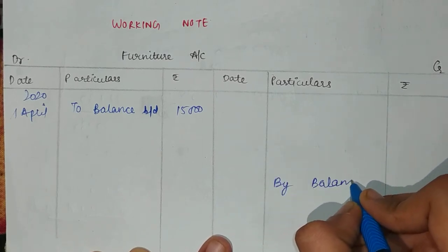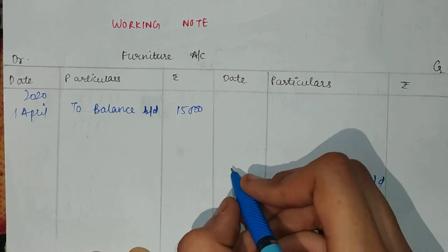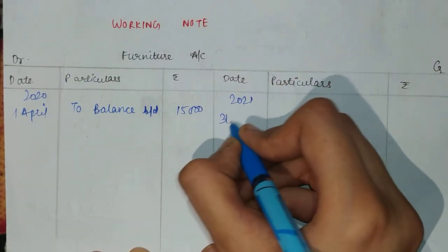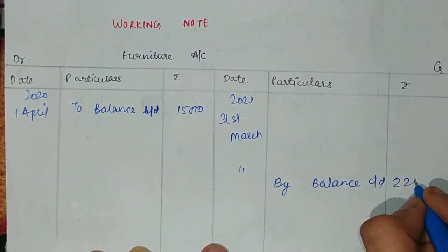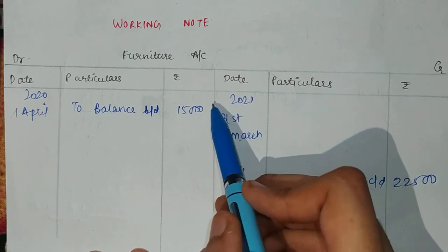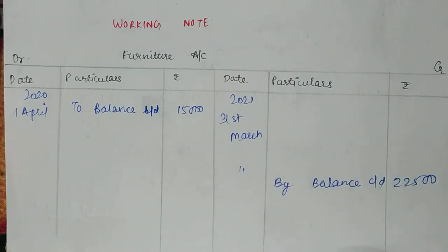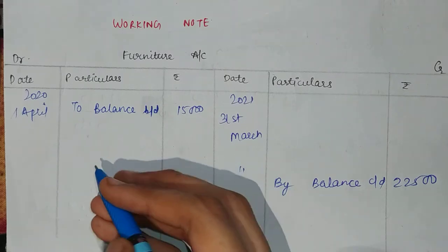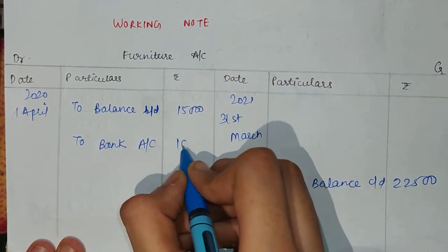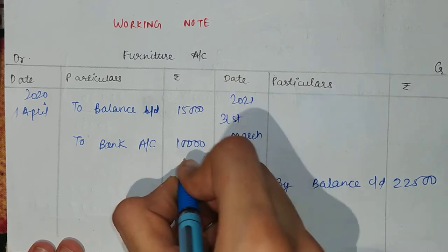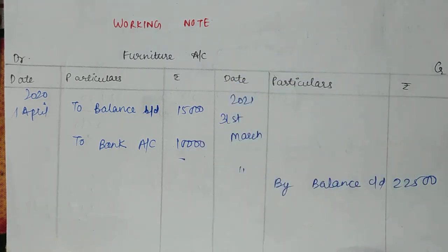Balance brought down at 31st March 2021 is $22,500 — meaning the opening and closing furniture values are given. In between, there will be some purchases and some depreciation. The purchase is given in the receipts and payments account on the payment side — furniture purchased for $10,000 from bank. So the total debit side is $25,000.